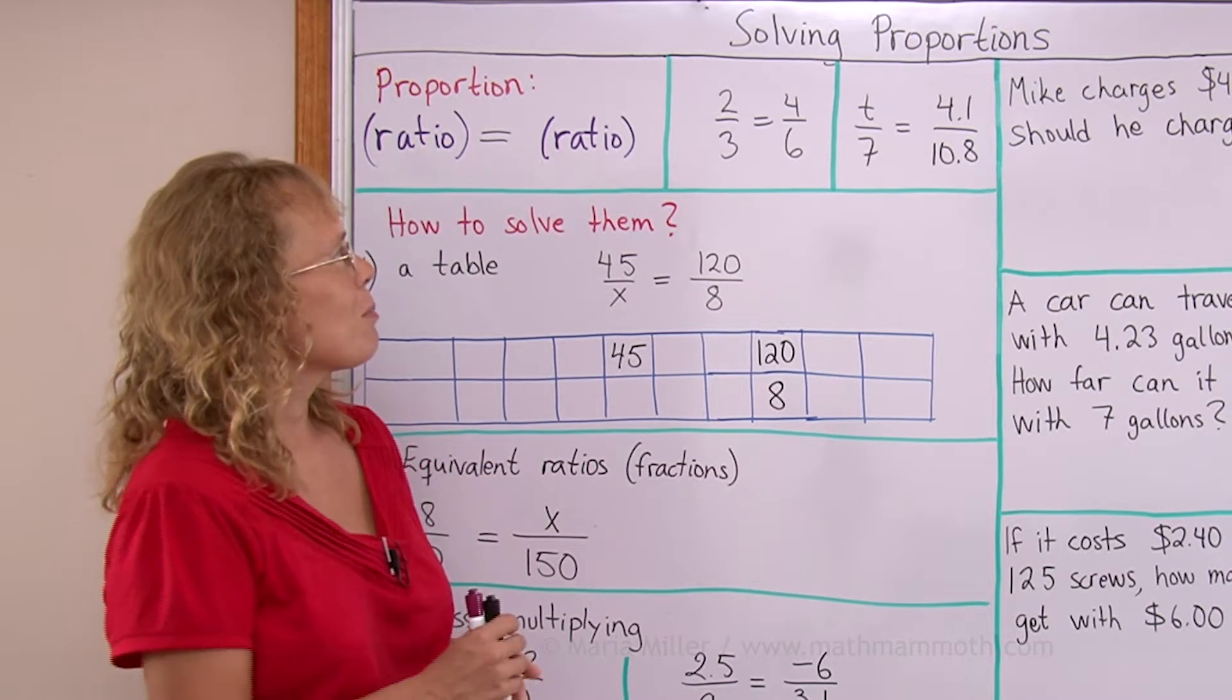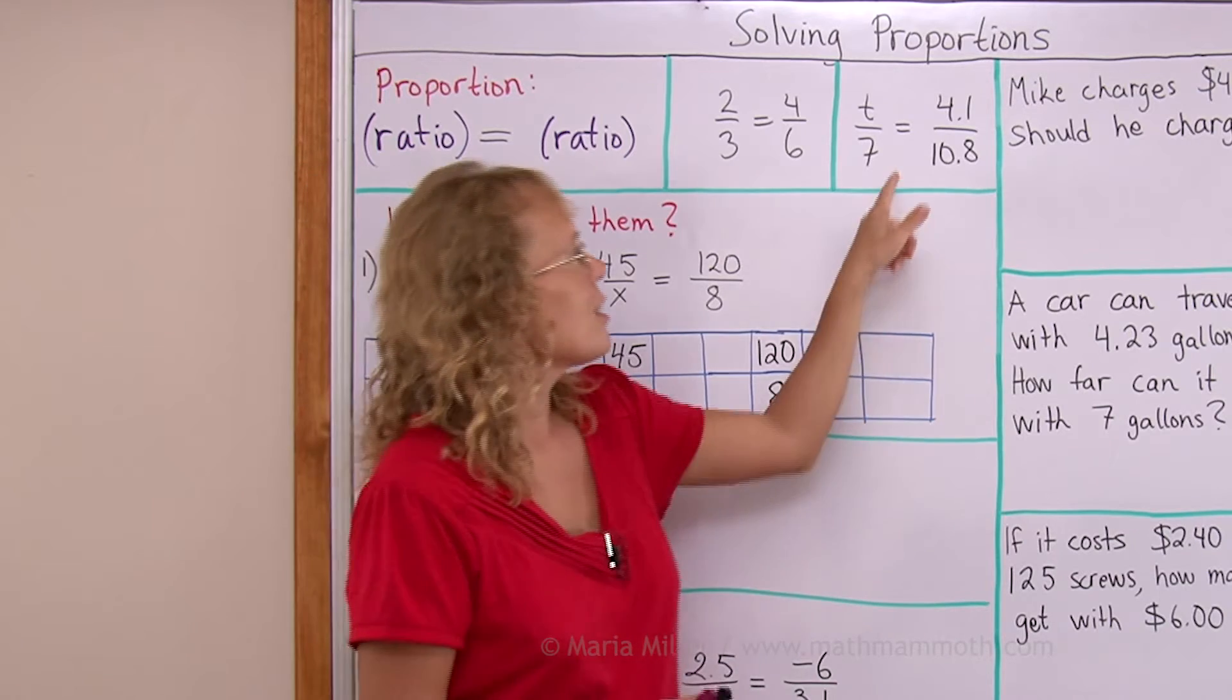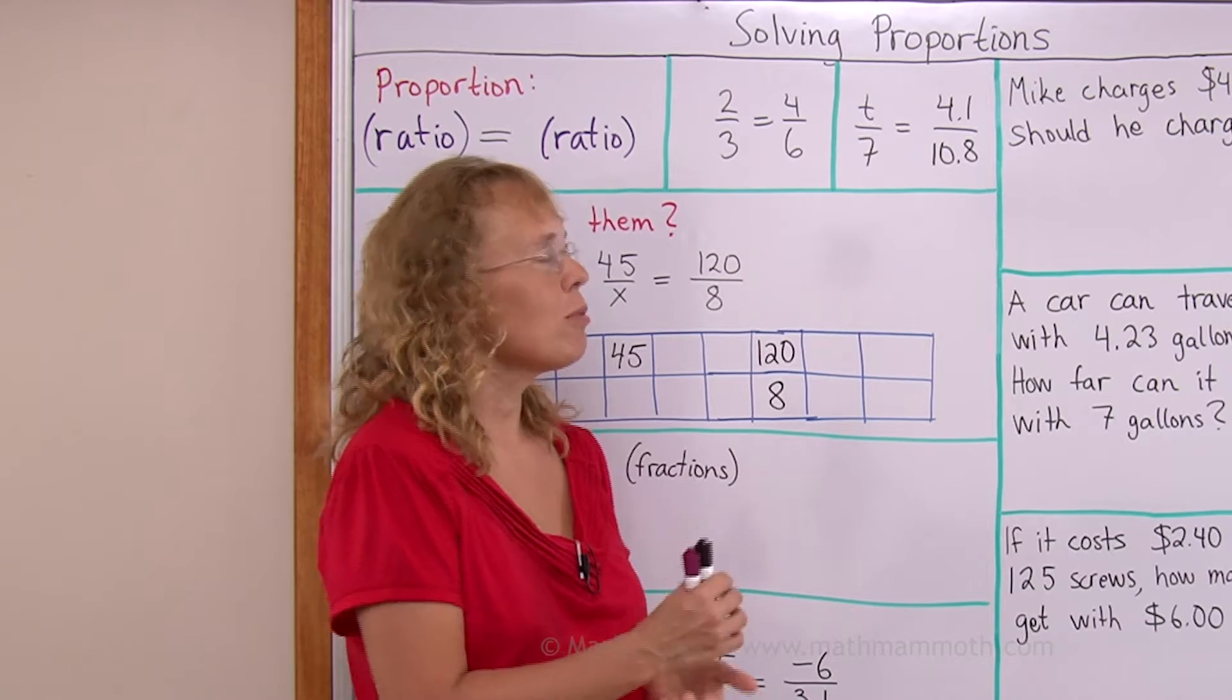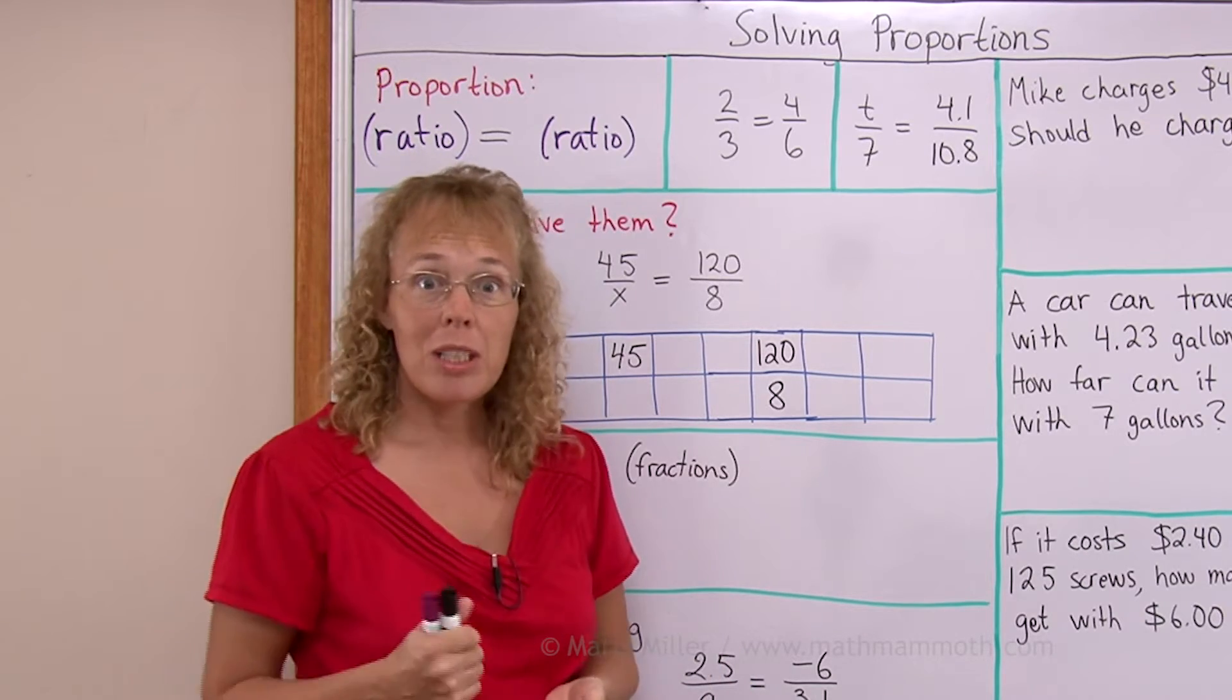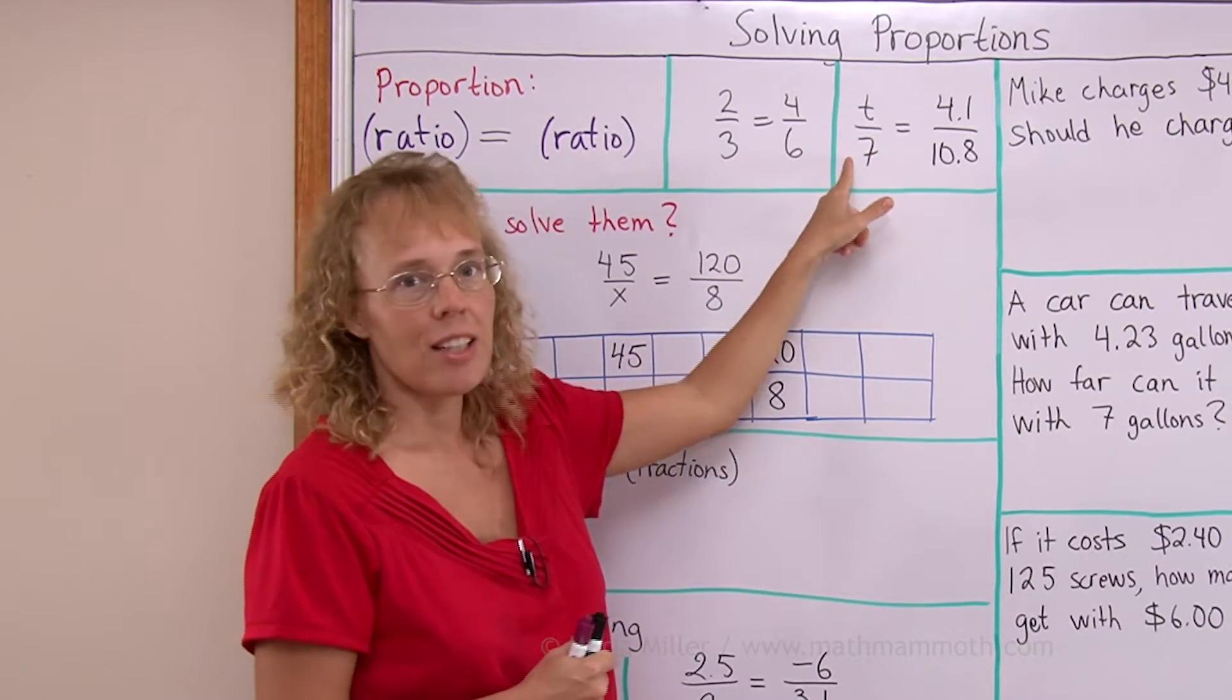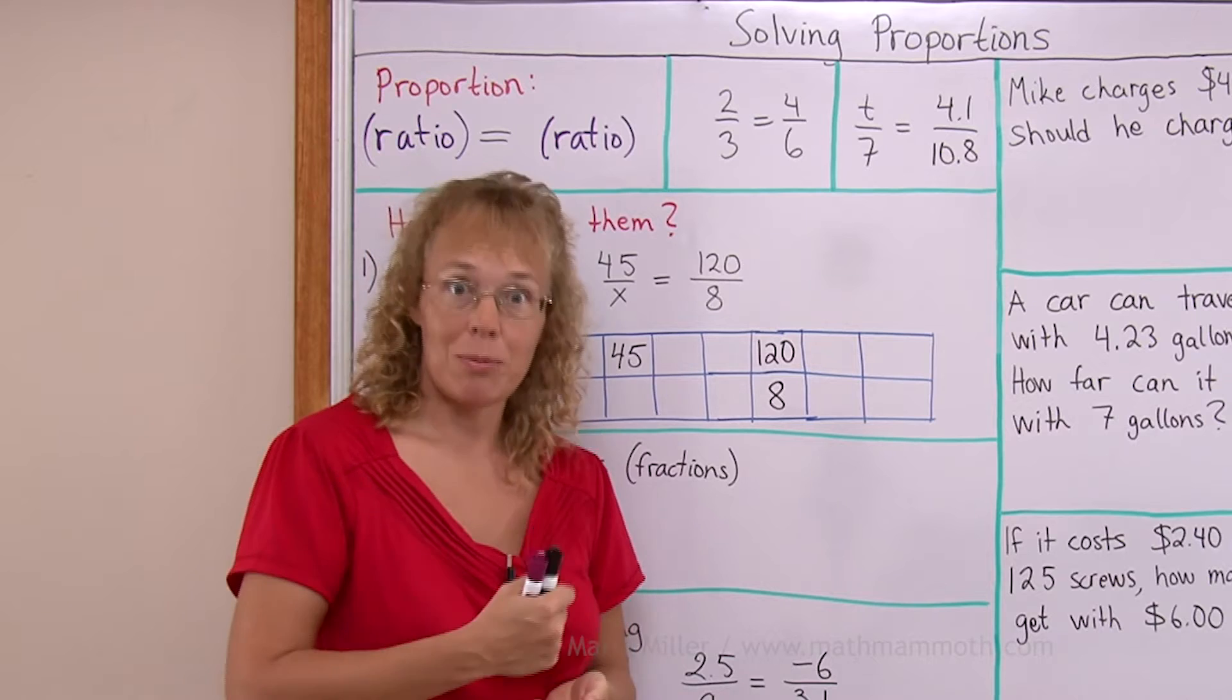You can, of course, think of them as fractions too. 2 thirds equals 4 sixths. Here's another proportion. T over 7 equals 4.1 over 10.8. It is a proportion because you can think of those as ratios. The ratio of T to 7 is the same as the ratio of 4.1 to 10.8.